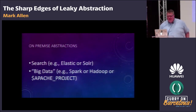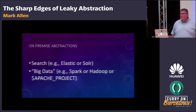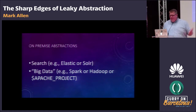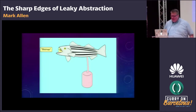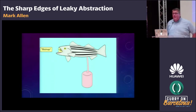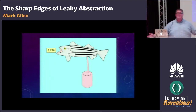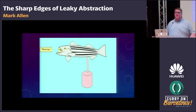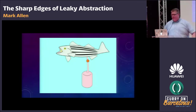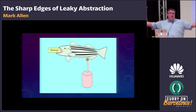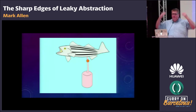We still have the traditional on-premise abstraction model. We have Search — Elastic and Solr made search a lot more accessible. There's the big data stuff: Spark, Hadoop, and Apache projects. You can put any random Apache project in there and it will pretty much be big data. And we also have databases. I used to work at Basho. We abstract away storage, storing data and retrieving data — we hide it behind this interface of SQL. That's fantastic and desirable. We don't want to manage all the complexity all the time; there's just too much cognitive load for that.